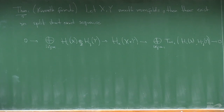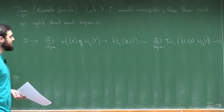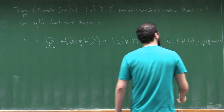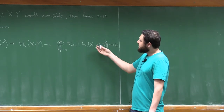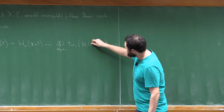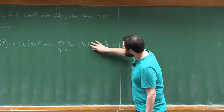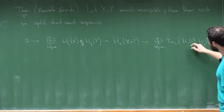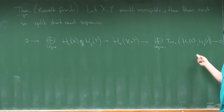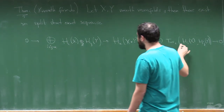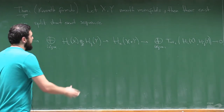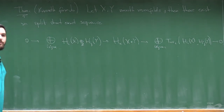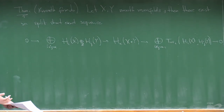This is a kind of formula; for instance, if any of these groups has coefficients in a field, the Tor term will always be zero because everything is torsion free. So we will have an isomorphism when we have coefficients in ℝ, for instance.